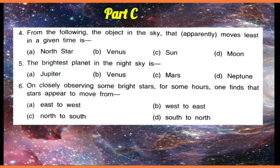Then next is question number four. From the following, the object in the sky that apparently moves least in a given time — the one that moves the least is the North Star, which is the Pole Star. Its position is approximately fixed because it lies nearly exactly on the axis of rotation of the Earth.